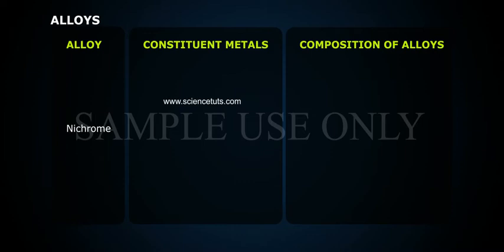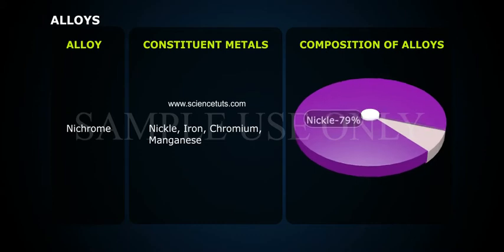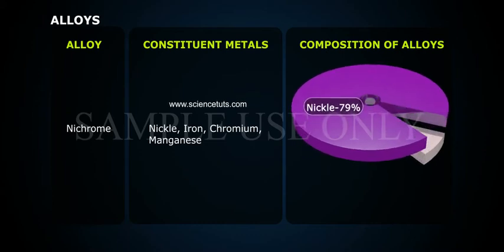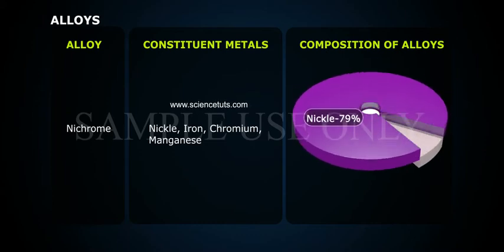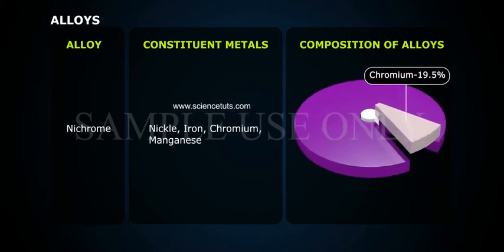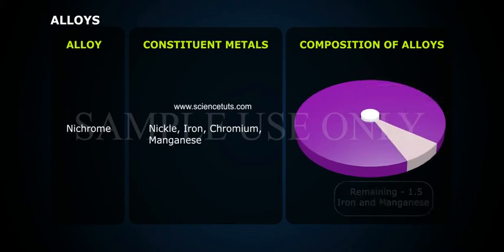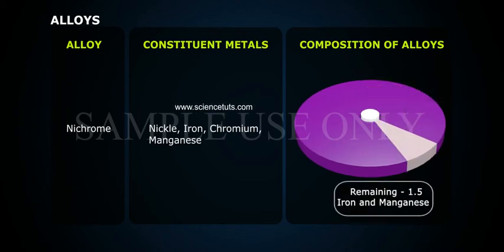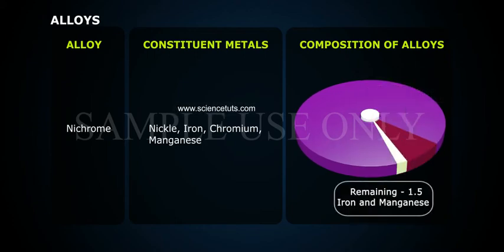Nichrome is composed of nickel, iron, chromium, and manganese — nickel 79%, chromium 19.5%, and the remaining 1.5% iron and manganese.